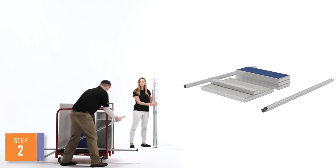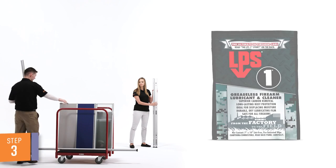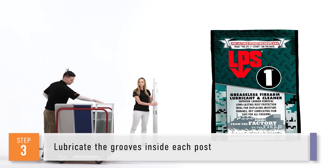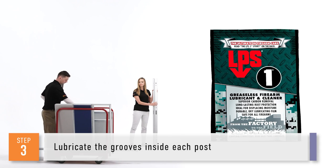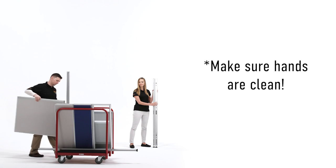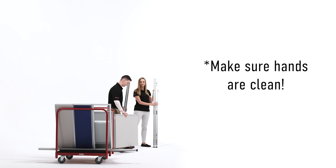Next, use supplied lubricated wipes to lightly lubricate the grooves inside each post in preparation for installing the first group of cubicles. This method is suggested for smoother assembly. We recommend staying diligent about clean hands to keep all products nice and fresh for the client. You might even want to wear some thin gloves.